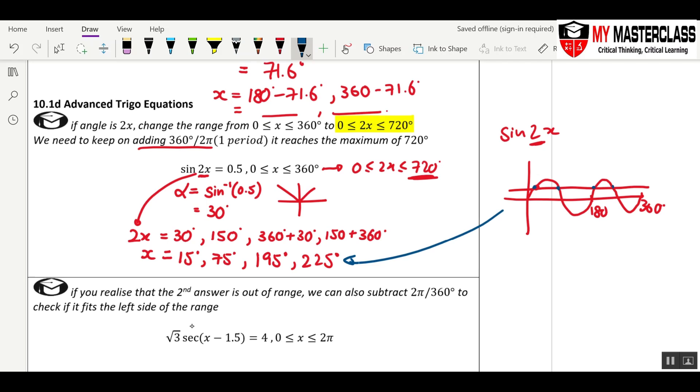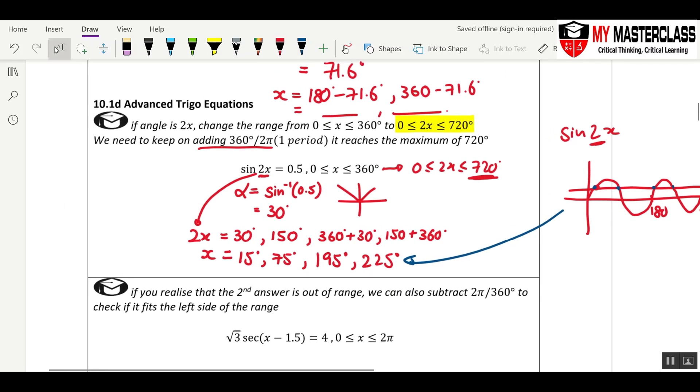So that's why if x is from 0 to 360, there will be 2 solutions. So you always edit your range if the angle is weird. Then we keep on adding 360 until it fills the range. If you add another 360 to here, it will be outside of the range. So that's why you stop at the fourth answer.